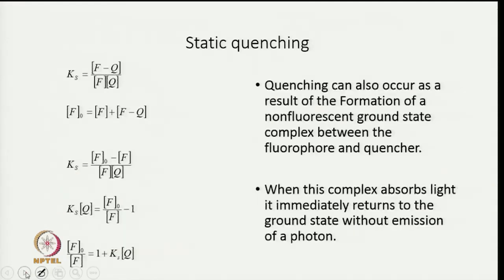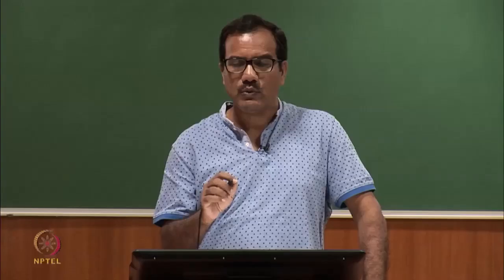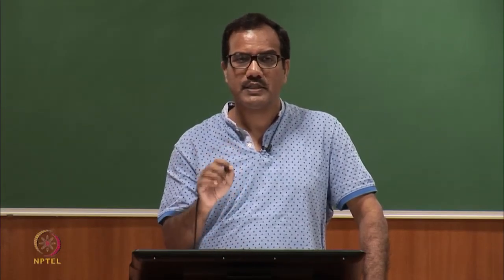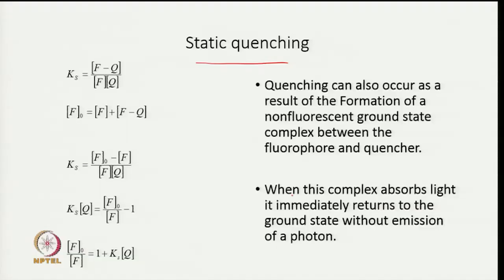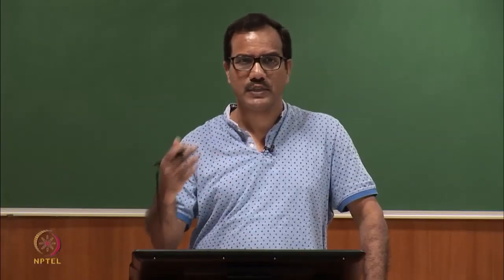I also discussed about the second type of quenching which is known as static quenching. In static quenching, quenching takes place because of formation of a non-fluorescent ground state complex between fluorophore and quencher. The quencher is associating with the fluorescent species in its ground state. When this complex absorbs light, it immediately returns to ground state without emission of a photon, so this complex does not contribute to fluorescence intensity.